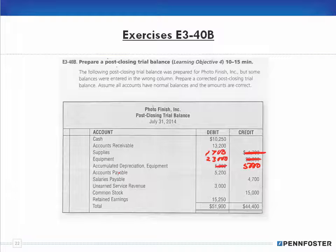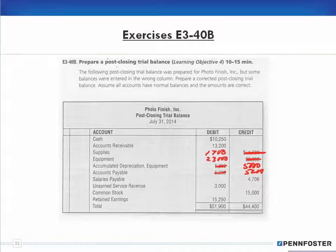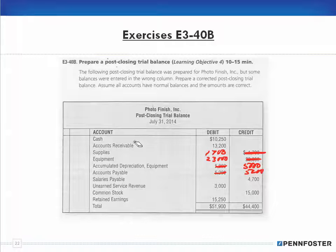For liabilities, the normal balance is a credit. So accounts payable — the 5,200 belongs on the credit side. Salary payable is already in the right column. Unearned service revenue is a liability account even though it says 'revenue' — go back and watch other videos as to why. Since it's a liability, its normal balance should be a credit, so this 3,000 belongs in the credit column, not the debit column.